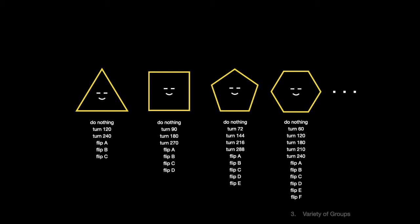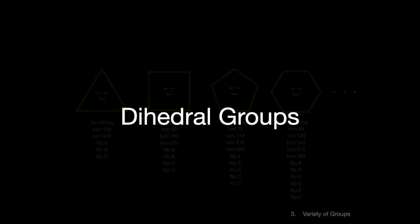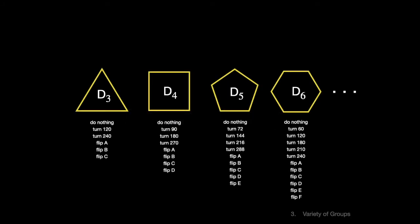All these groups together form another class. They are called dihedral groups. Dihedral meaning two-faced. Here's the notation we use to describe dihedral groups. D3 is the group of symmetries of a triangle. D4 is the group of symmetries of a square, and so on. Here, the subscript refers to the number of sides on the corresponding polygon. The order of the group is twice that.